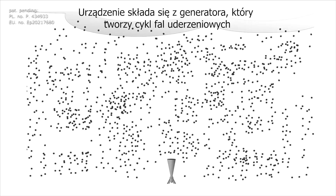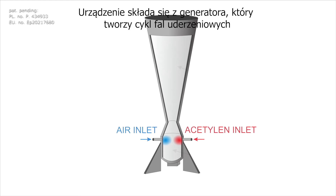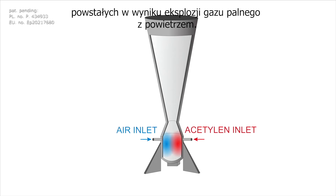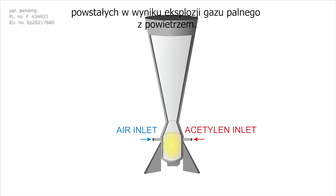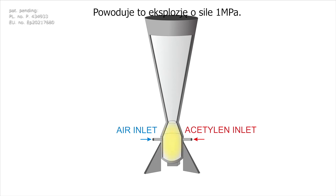The invention consists of a shock generator which creates a cycle of shock waves by exploding a mixture of combustible gases in air. When the detonation chamber is filled up with acetylene, the ignition is induced, which causes an explosion of the strength of 1 MPa.